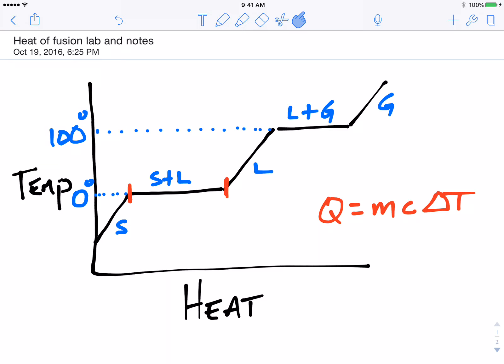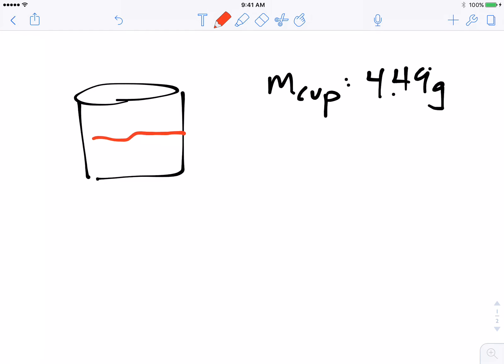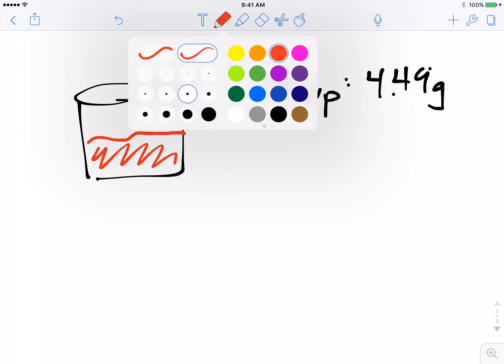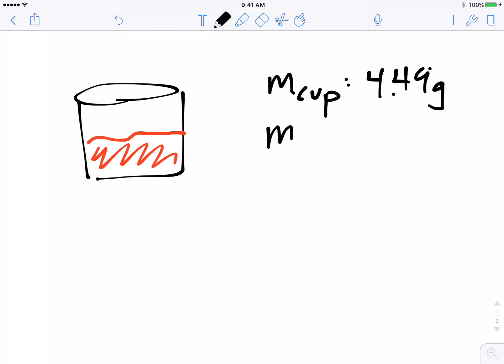So what I'm going to do is kind of describe the lab and give you some data that was collected. And so in the lab, what we did was that we had a cup. We got the mass of the cup and the mass was 4.49 grams. And then we put water in it, some hot water. And then we took the mass again. So the mass of our cup plus the hot water, and this group added 100 grams. So the total mass was 104.49 grams.